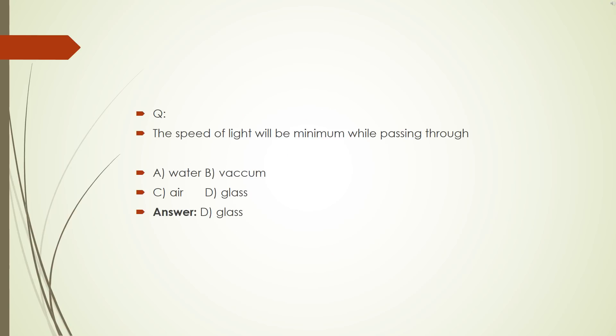Question number 3. The speed of light will be minimum while passing through A, water, B, vacuum, C, air, D, glass. The correct answer is D, glass.